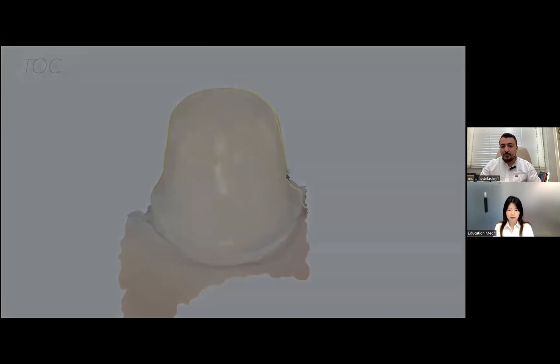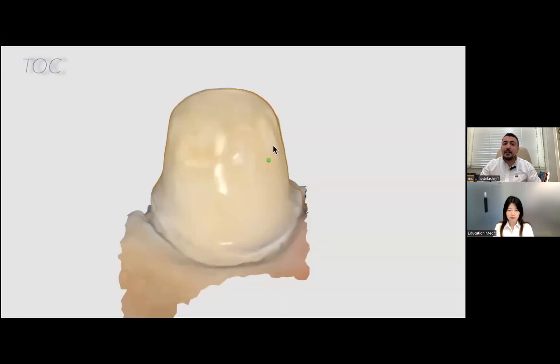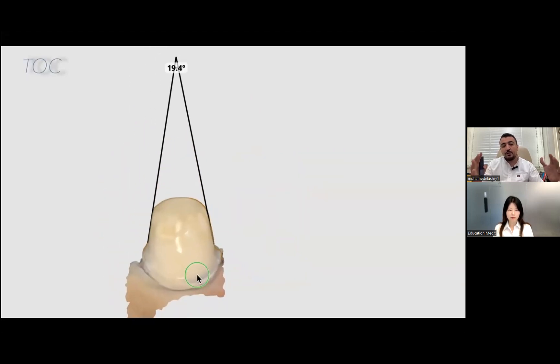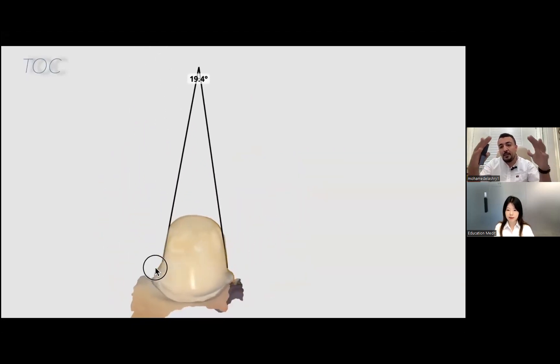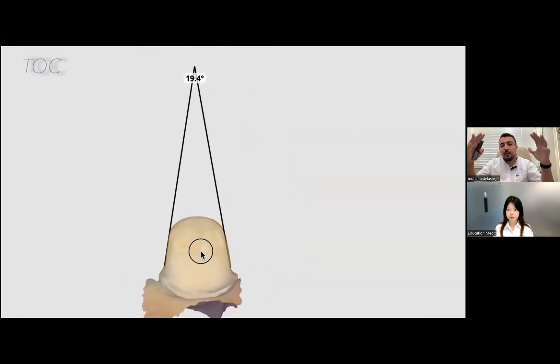This angle between this wall and this wall should be less than 20 degree or 22 degree. This taper should be ranging from 10 degree to avoid undercuts to 22 to avoid overtaper, because this overtaper will affect the resistance and retention form of the restoration.